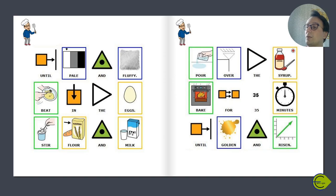Beat in the eggs. Stir in flour and milk. Pour over the syrup. Bake for 35 minutes until golden and risen.